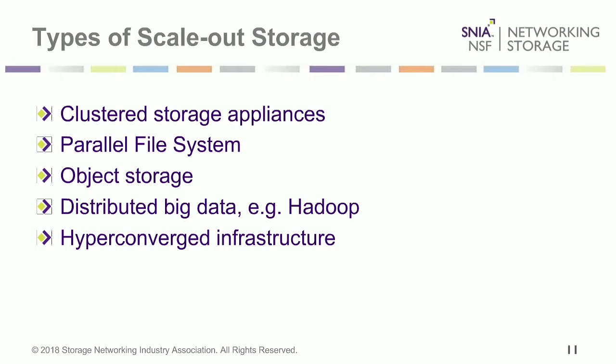Parallel file systems — such as GPFS (now Spectrum Scale), Lustre, BGFS, or Gluster — run across multiple storage nodes and sometimes have software running on multiple clients. This allows many different clients to access the same storage running across multiple physical systems, providing more capacity and performance while appearing as one big file system. Different clients in different locations can read and write from the same file at the same time.